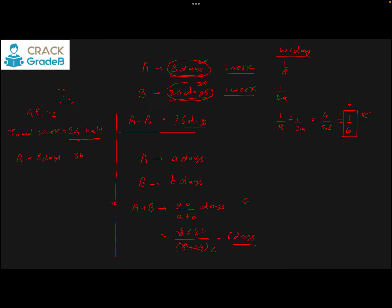We can take the amount of work of our own choice for these kinds of questions. If A makes 24 hats in 8 days, every day he makes 3 hats per day. If B makes 24 hats in 24 days, every day he makes 1 hat per day. Together they make 3 + 1 = 4 hats per day. The number of days required is the work to be completed divided by the rate at which it is being completed. Total work is 24 hats, every day 4 hats are made, so 6 days are required.